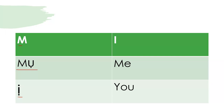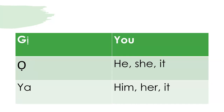The next one we have here is 'E,' for 'you.' Okay? 'E.' The next step we have here is the second person singular, which is 'U.' We start with 'U.'